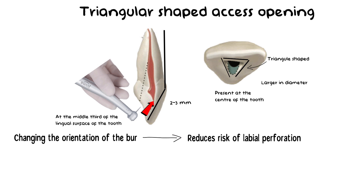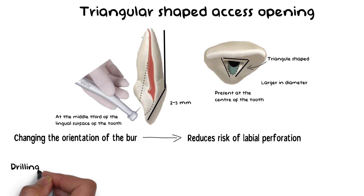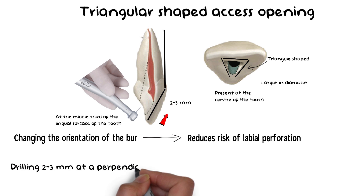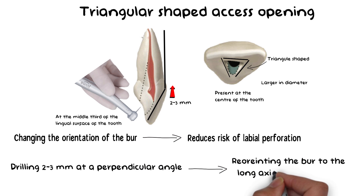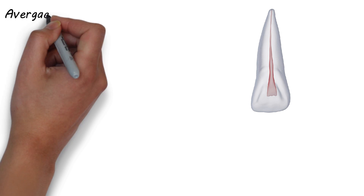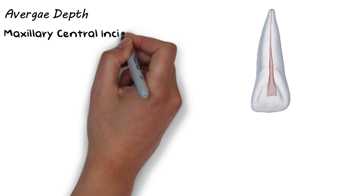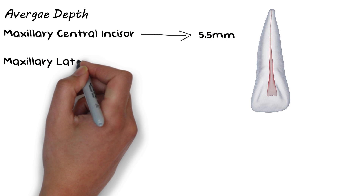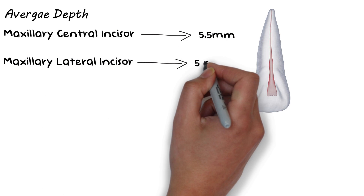This is especially valid for the maxillary central incisor, as its crown has more angulation compared to the maxillary lateral incisor. To conclude, the chamber opening of the incisor is done in two steps: first by drilling two to three millimeters at an angle perpendicular to the tooth, and then the burr is reoriented to coincide with the long axis of the tooth. The average chamber depth for the maxillary central incisor is about 5.5 millimeters, while that for the maxillary lateral incisor averages around five millimeters.